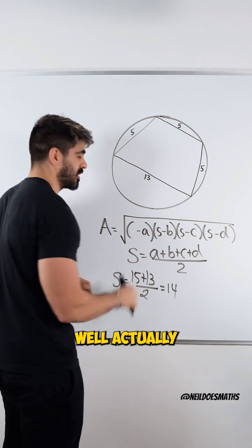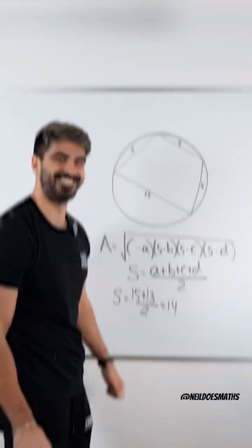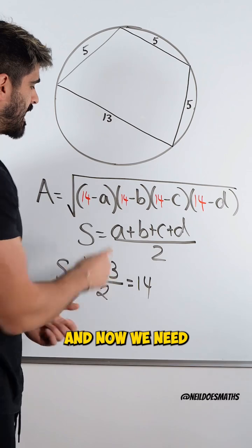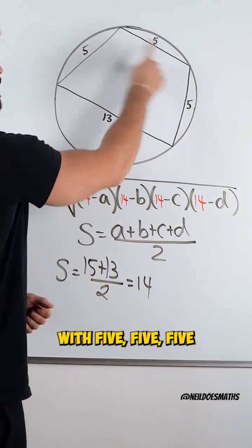So all of these s values, well actually let me just remove these s's and change them to 14. So we have all these 14s and now we need to replace a, b, c, d with 5, 5, 5, 13.